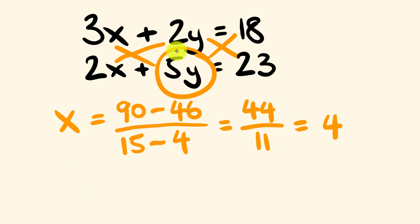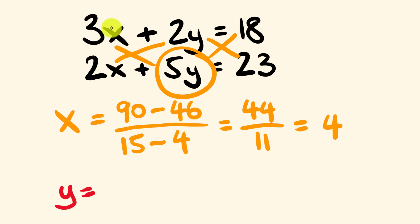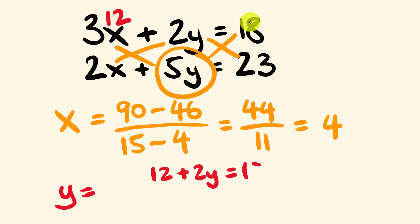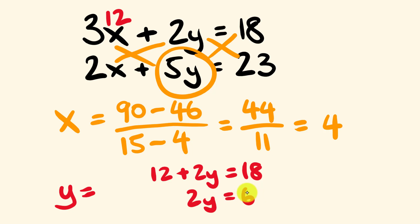So how are we going to solve for y? We're just going to substitute in our x value. Let's substitute x equals 4 into the first equation: 3x plus 2y equals 18. So 3 times 4 is 12. We have 12 plus 2y is equal to 18. Taking 12 from both sides, we get 2y is equal to 6. Therefore y is equal to 6 divided by 2 — y is equal to 3.